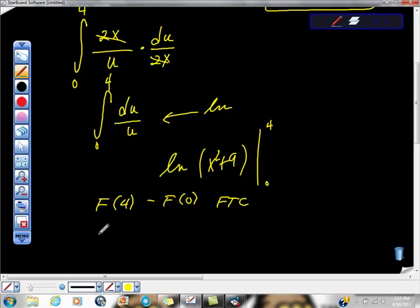So we're going to do that. We're going to do, it'll be ln of 25, right? 4 squared is 16, 16 plus 9 is 25. This negative sign right here is this one. f of 0 is ln of 9, right? 0 squared is 0 plus 9 is 9, ln of 9.